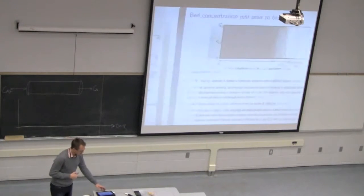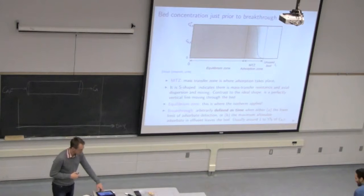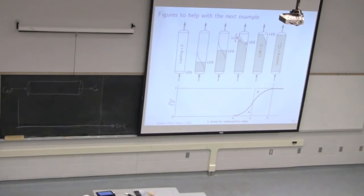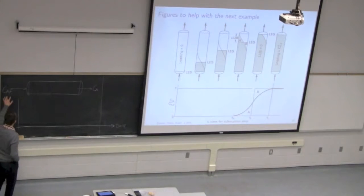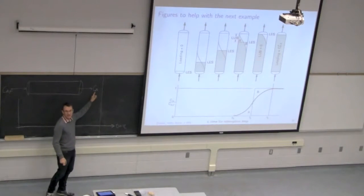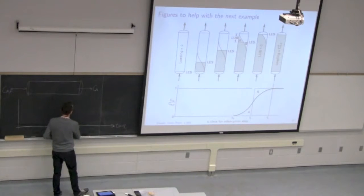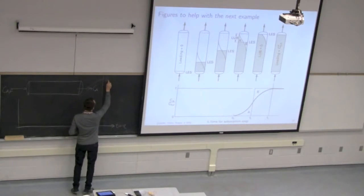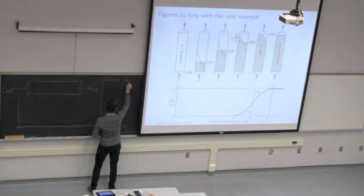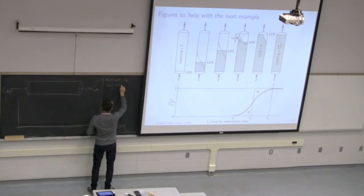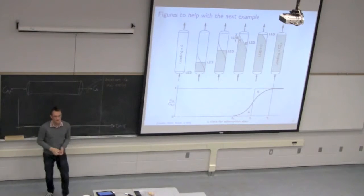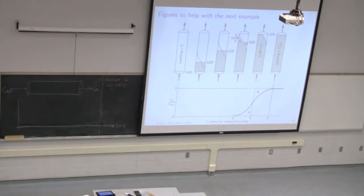I just wanted to talk about one final point before we move on to the example. If we consider these packed beds through time and take one final plot, we've got our concentration leaving at the exit CA. This is very easy to observe and measure — we can measure CA very easily. It's usually a component of interest, H2S for example, and we can get a detector that is very sensitive to measuring H2S.